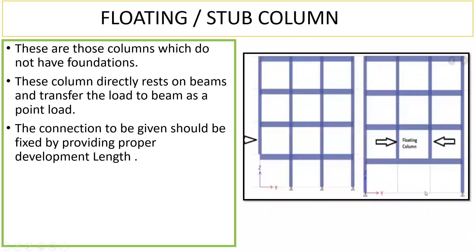Now if you see here, this is a building elevation modeled using Staad Pro or ETABS software. You can see columns here, and these have fixed supports, meaning there are foundations here — these are normal columns. But you can see one column here that has no foundation given, so it is floating in air. That is the reason we call this a floating column or stub column.